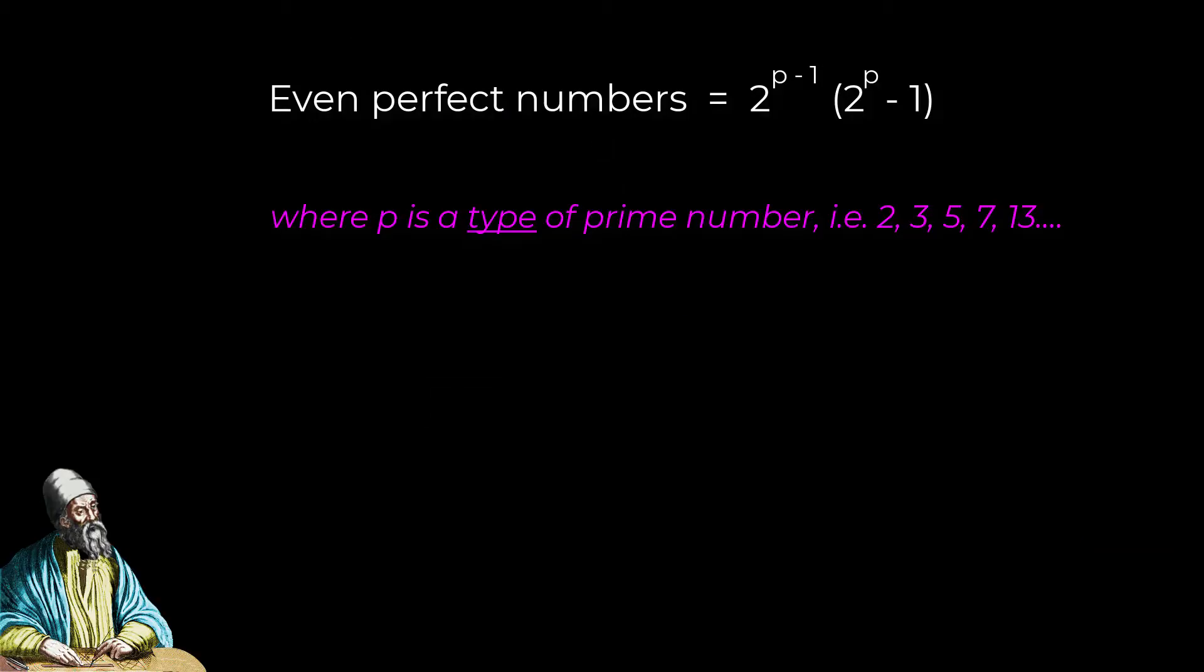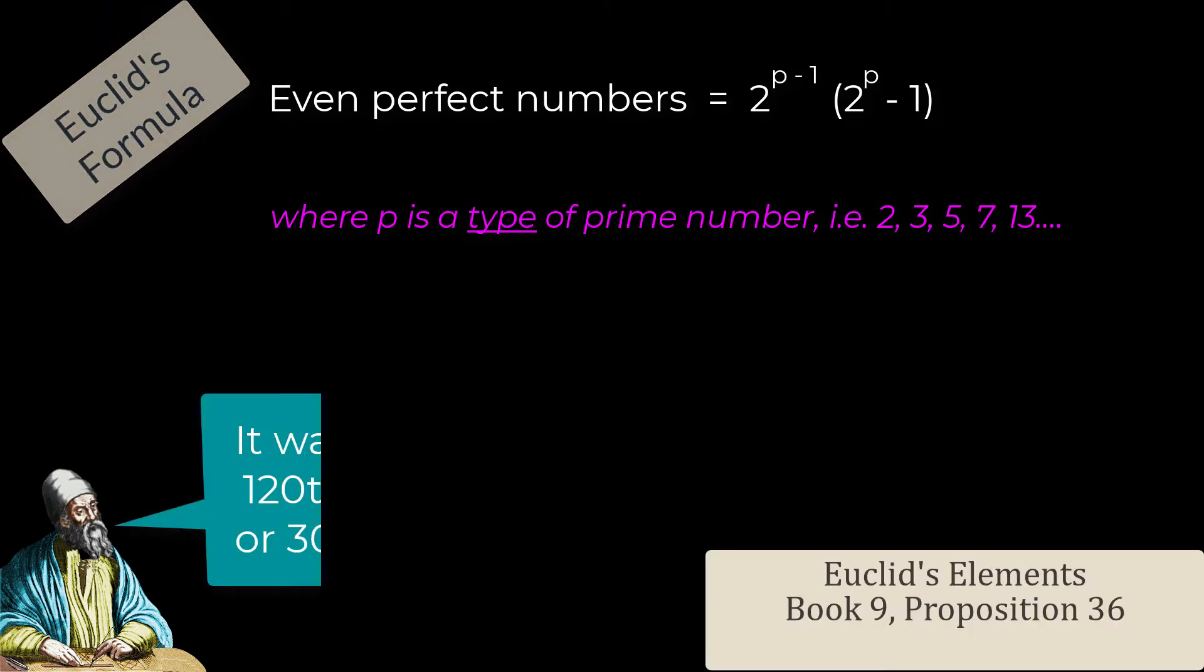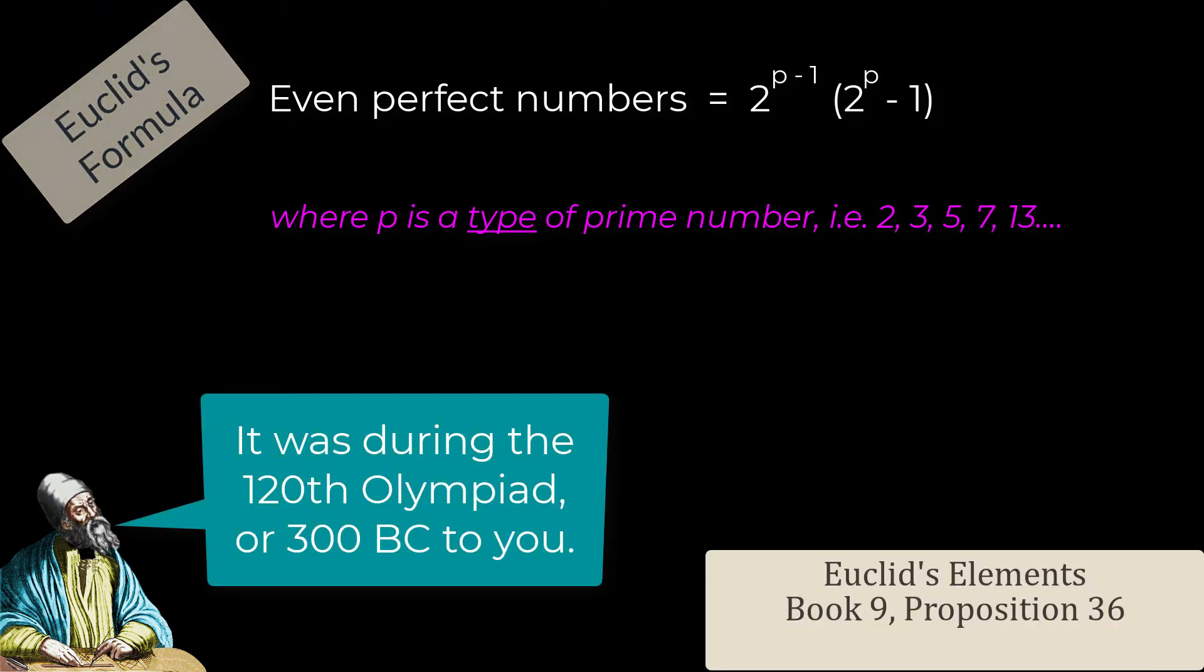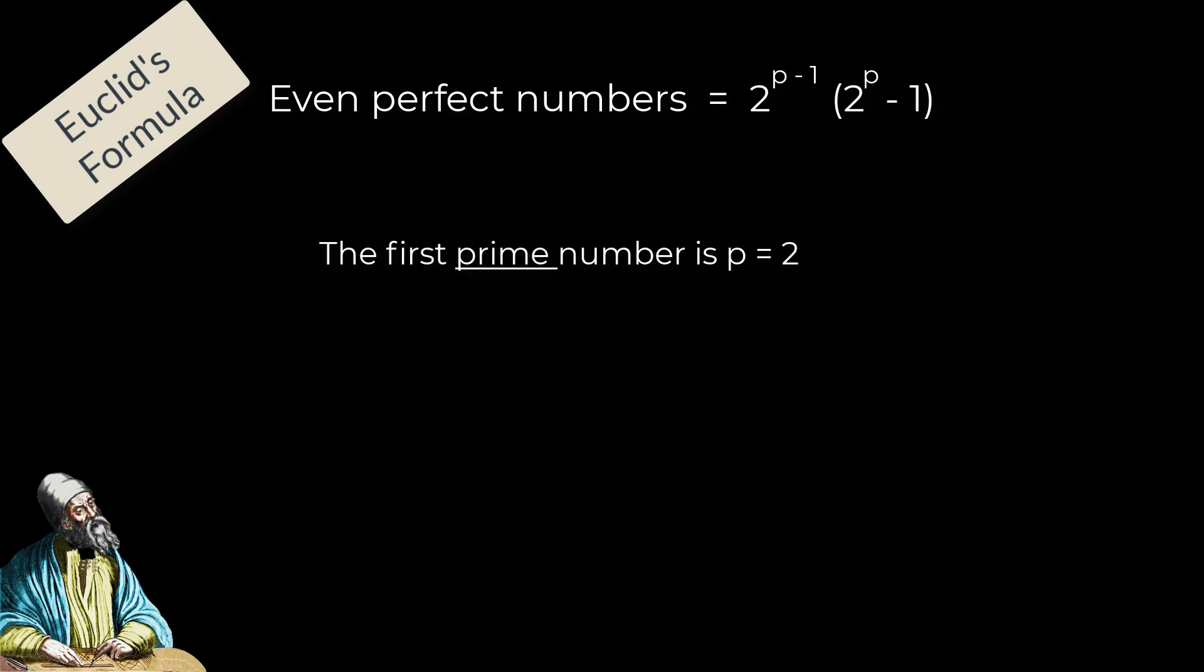I mentioned a nice simple formula for even perfect numbers. Euclid recorded its proof 2000 years before Euler was born. So, here's the formula in action. If we put the first prime number, 2, into Euclid's formula, it returns the first perfect number, 6.